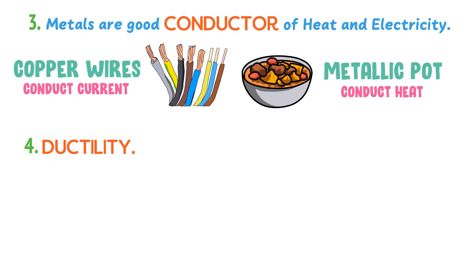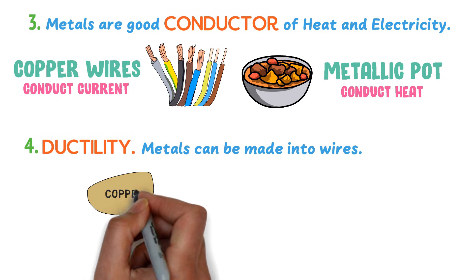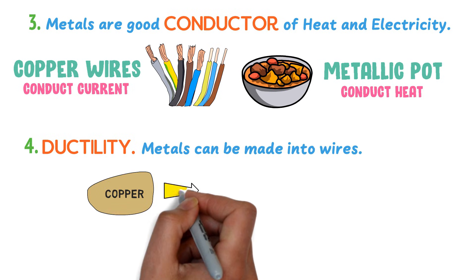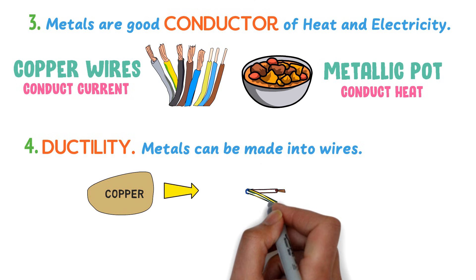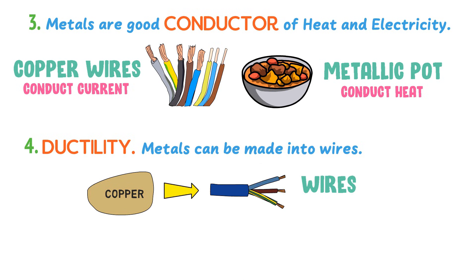Fourthly, ductility — metals are ductile. It means that metals can be made into wires. For example, copper is a metal; we make long copper wires for conduction of current and electricity. This property of metal is called ductility.